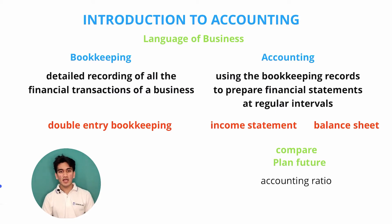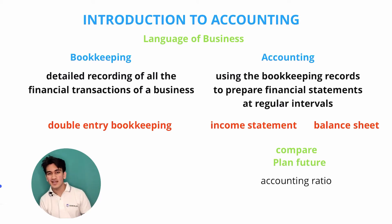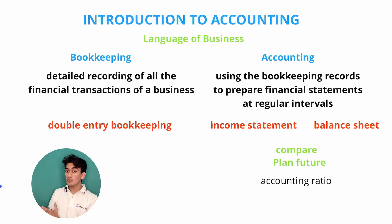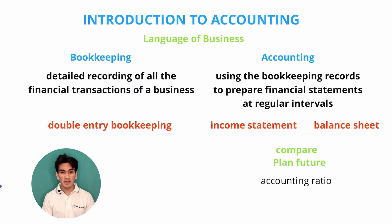Accounting has mostly two parts: bookkeeping and accounting. Bookkeeping is a detailed record of all the transactions that take place in a business — all transactions, small or big. For example, if I purchase an eraser for $1 or a property of land for $1 billion, all of these are recorded. All businesses, even small ones and big ones, should keep records, or else something might be missed or overlooked.